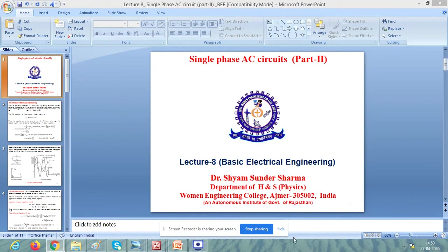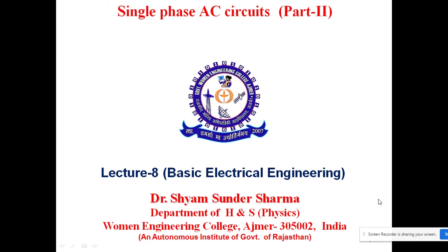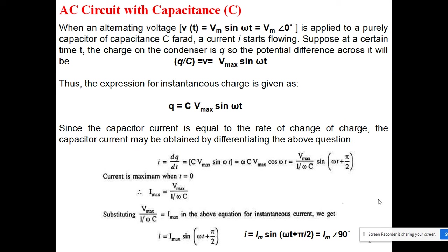Good morning students. Today we will discuss Part 2 related to single-phase AC circuits. In yesterday's class we discussed the resistance-only circuit and inductance-only circuits. Today we will discuss the capacitance-only circuit and the combination of capacitance and inductance circuits. So, AC circuit with capacitance: if an alternating voltage is applied to a pure capacitor of capacitance C, then a current I starts flowing.